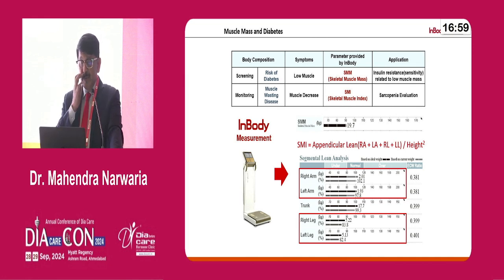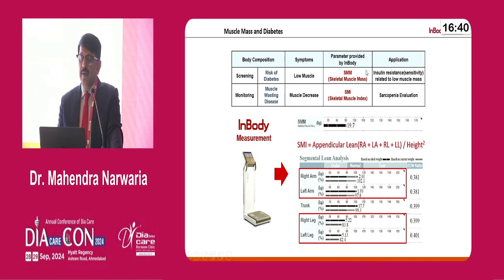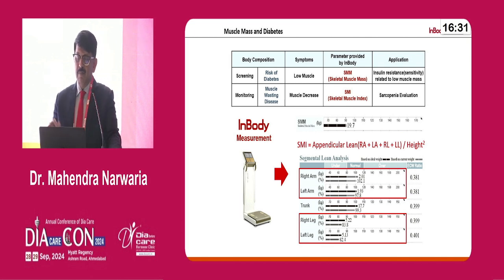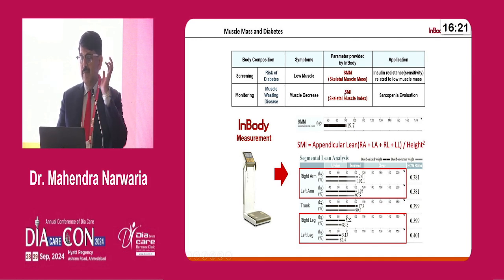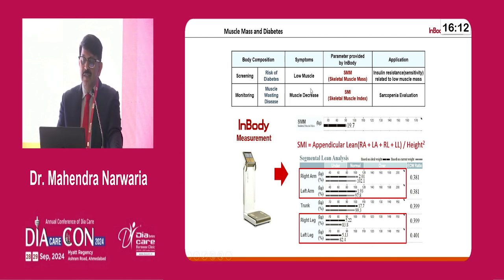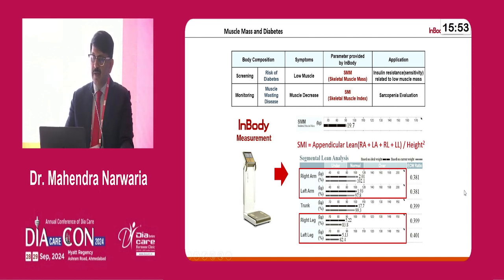Body composition can be used in different ways: to screen persons at risk of diabetes — mainly those with low muscle mass — since skeletal muscle mass can be analyzed by the InBody machine, and insulin resistance is related to low muscle mass. We also monitor whether patients are losing or gaining muscle mass. When muscle decreases, the Skeletal Muscle Index (SMI) may go high and they develop sarcopenia. SMI is calculated as the weight of right arm, left arm, left limb, and right lower limb divided by height squared.